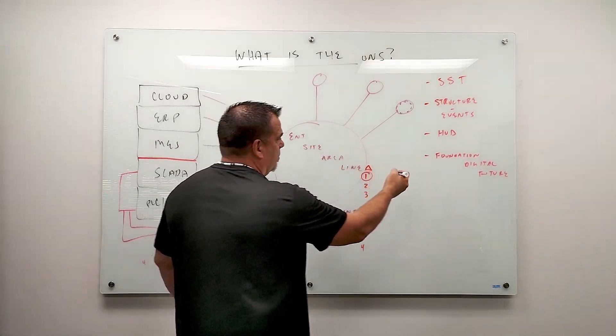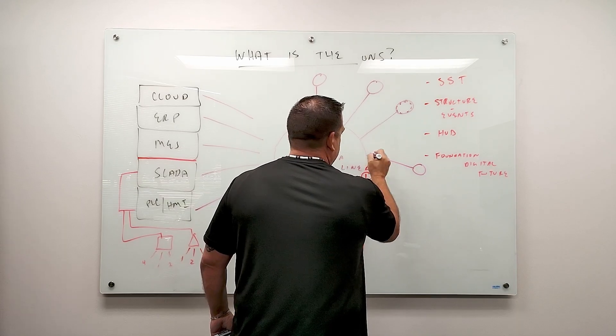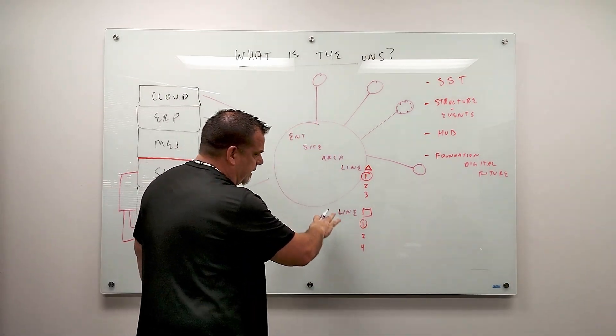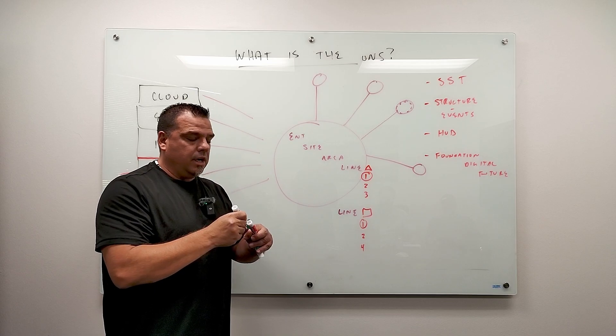Over time, we add more and more circles. And this namespace gets bigger and bigger and bigger. That's the UNS. All right. Questions that people have.